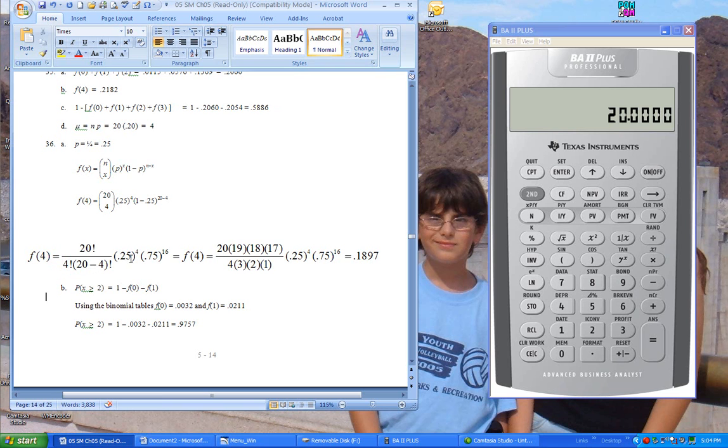So here we have the combination term for the binomial distribution. For this particular problem, P, or the probability of success, is 0.25, and the probability of failure is 0.75. And so we want to know what's the probability of exactly four successes out of a group of 20 trials.